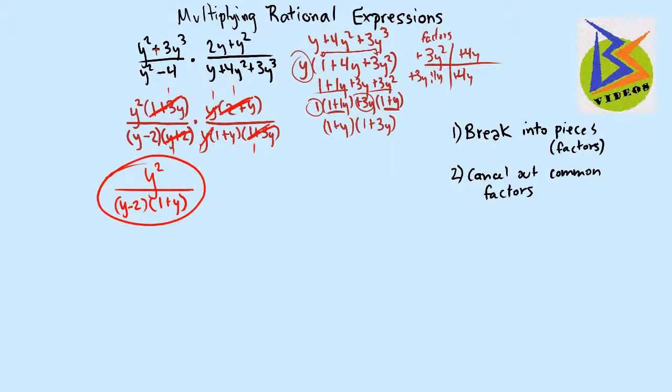And we could leave it like this. Or we could take and FOIL out the bottom and get y squared over, so if we have y minus 2 times 1 plus y, you get y plus y squared minus 2, minus 2y. Combine our like terms. So you get y squared. I'm going to put this in descending exponential order. Minus 1y minus 2. And so we could say that it's y squared minus 1y minus 2.